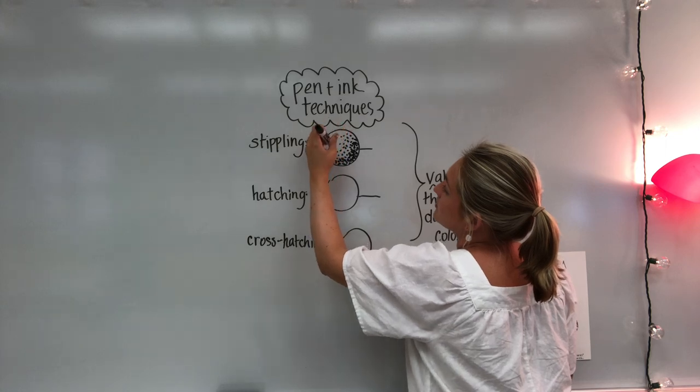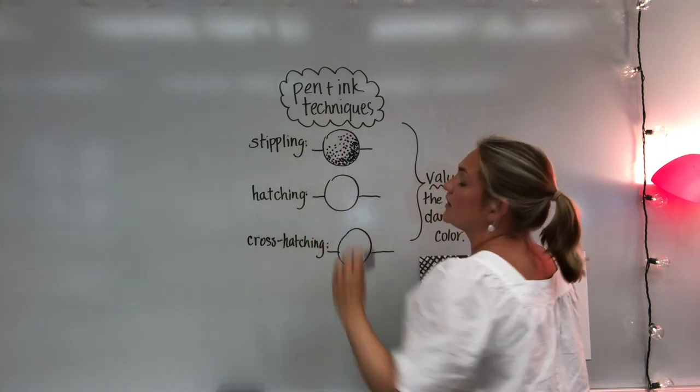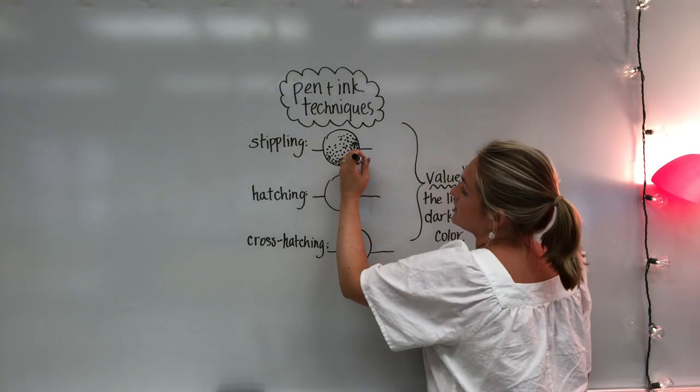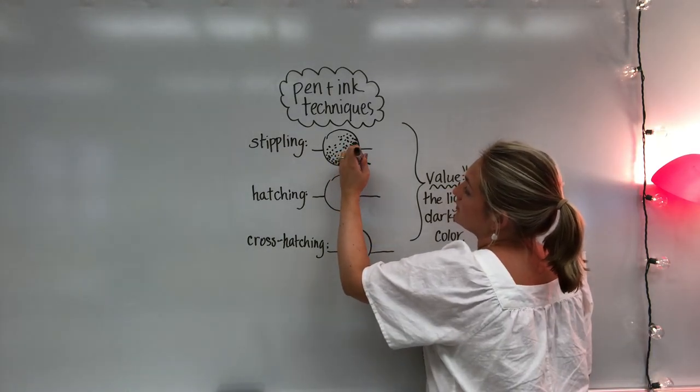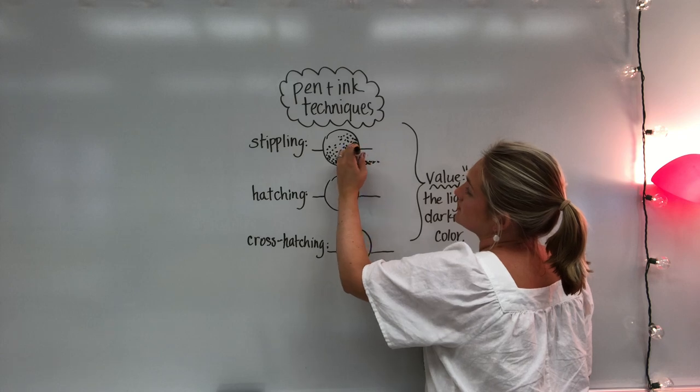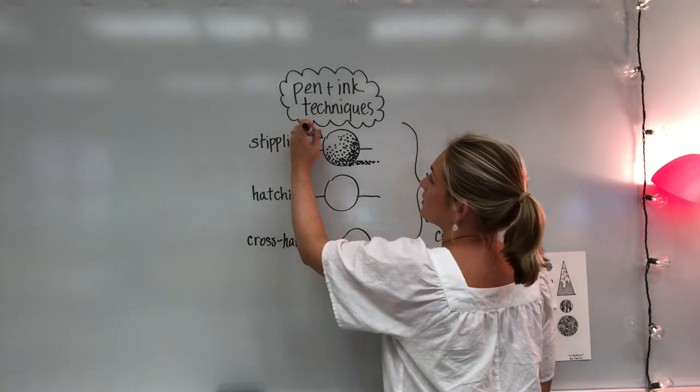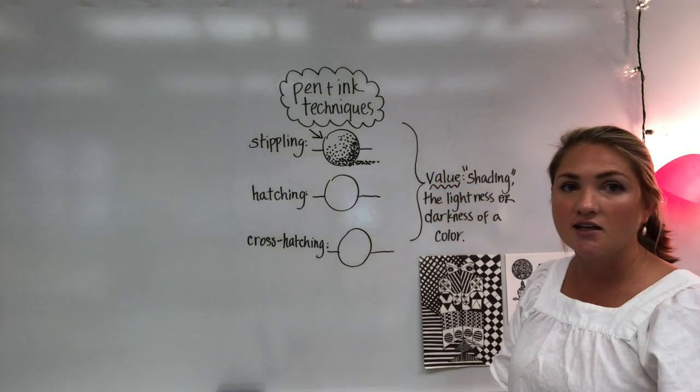The further apart you put those dots the lighter your value and we're going to talk about value in a second. You can also add some stippling below the sphere to create some shading. So now you've created a light source that's coming from the left and it's creating a shadow.